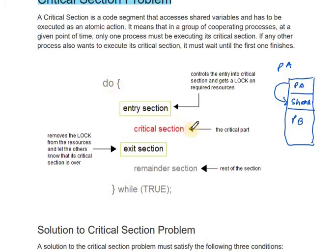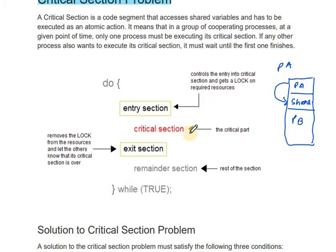Once the process passes the entry section and acquires a lock, it enters the critical section where shared data or shared code is accessed. After execution, it enters the exit section, where the lock is released. The exit section removes the lock from the resources and lets the others know that the critical section execution is over.